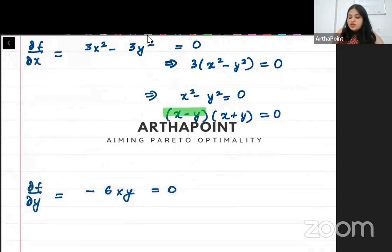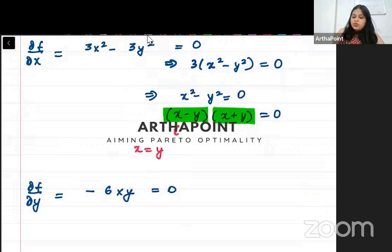This implies that either this is 0 or that is 0. Agar product 0 hai toh ya yeh 0 hai, yeh 0 hai. So if this is 0, then x equals y. And if this is 0, then x equals minus y.